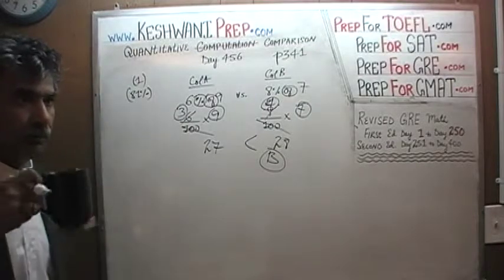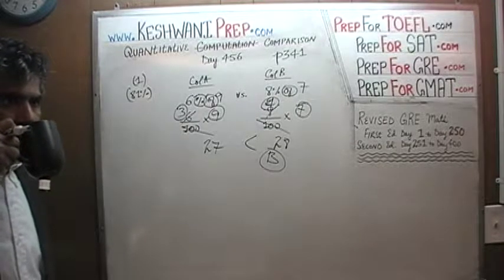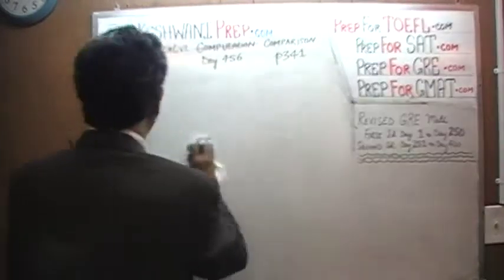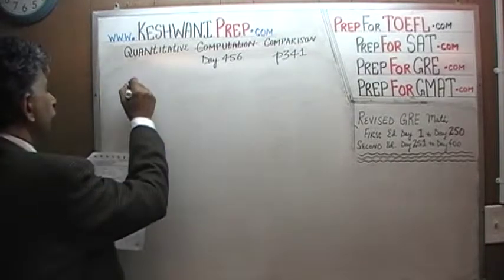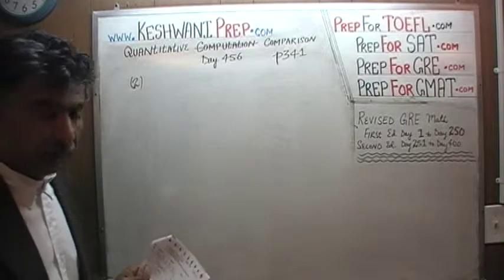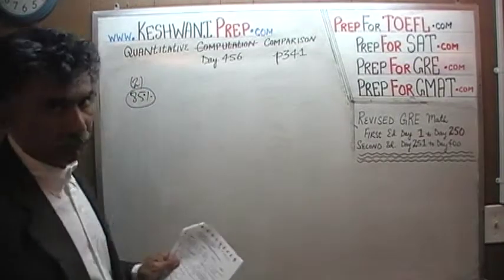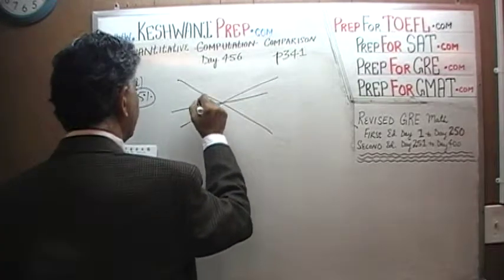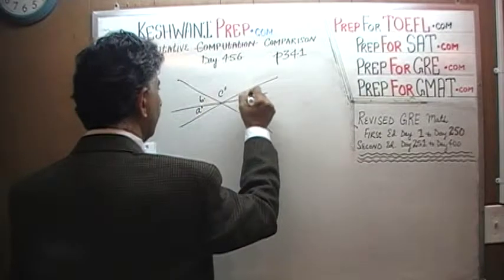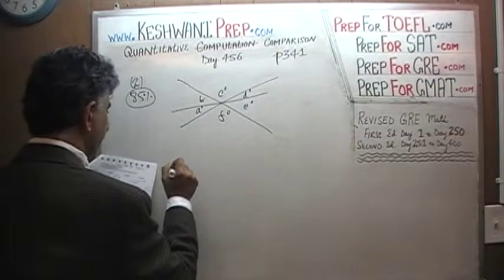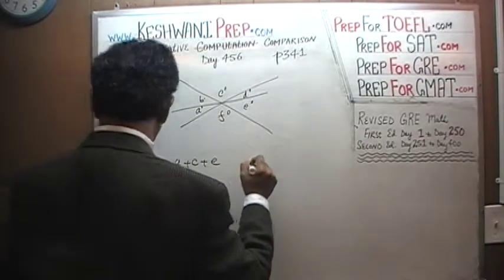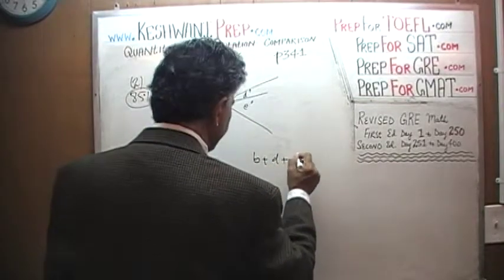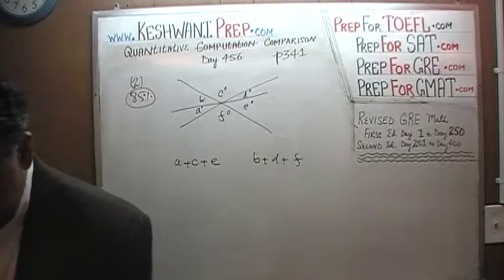Number 2. Question number 2 is a geometry problem — again very straightforward, being number 2. When it was given in the real exam, 85% of people had no trouble with it; only 15% missed it. We are told the angles are A degrees, B degrees, C degrees, D degrees, E degrees, and F degrees. We are being asked to compare A plus C plus E versus B plus D plus F. Pause the video and do it yourself — I will give you 5 seconds.